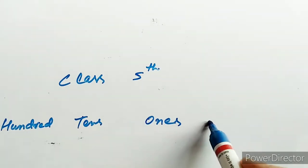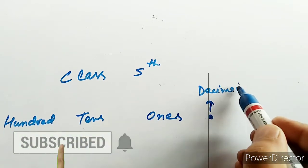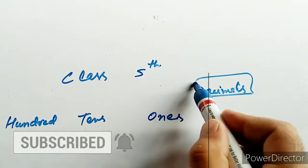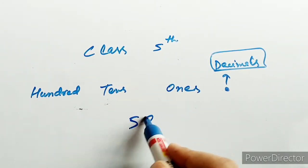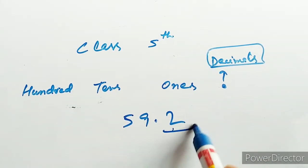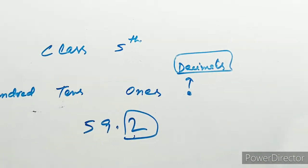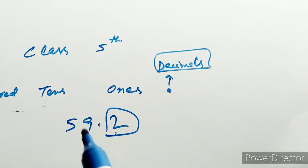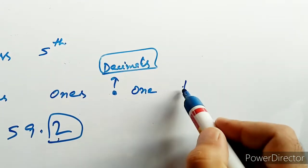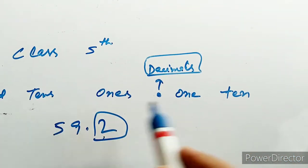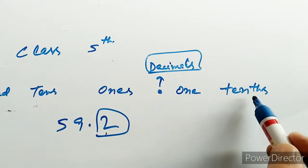लेकिन अभी हम लोग decimal के आगे जा रहे हैं। ये है decimal — जिसको आप point बोलते हैं। जैसे आपके पास number होते हैं, जैसे 59.2, तो ये जो point two है, इसकी place value होती है decimal से आगे। और decimal से आगे ये numbers कैसे होते हैं — ones के बाद point लगा, point के आगे होता है tenths। पहले होता था TENS, अब ये होगा TENTHS।